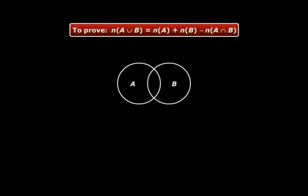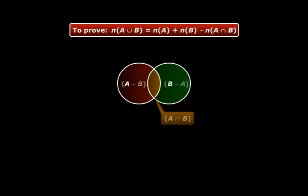What about A - B? This is this region. And B - A? That is this region. So let me show you these three regions once more. Now you can see from the Venn diagram that they are disjoint sets. That is, they do not have any element in common.